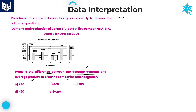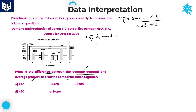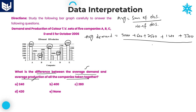Average equals sum of observations divided by number of observations. Average demand equals the sum of all demand values — that is 3000 + 600 + 2500 + 1200 + 3300 — divided by 5. Adding those up gives 10,600 divided by 5, which equals 2120.